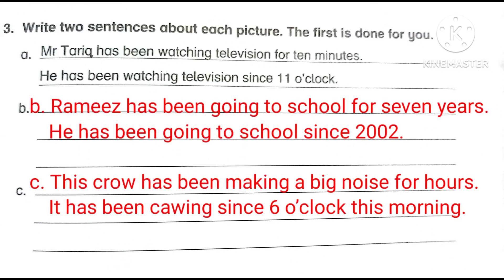Number Three: Write two sentences about each picture; the first is done for you. (a) 'Mr. Tariq has been watching television for 10 minutes.' / 'He has been watching television since 11 o'clock.' (b) 'Ramiz has been going to school for seven years.' / 'He has been going to school since 2002.' (c) 'This crow has been making a big noise for hours.' / 'It has been crying since 6 o'clock this morning.'